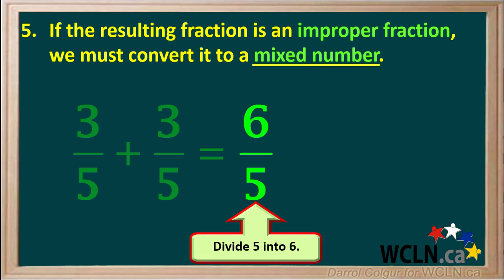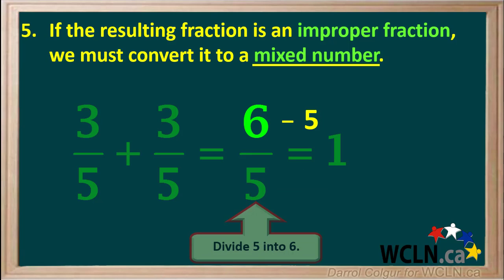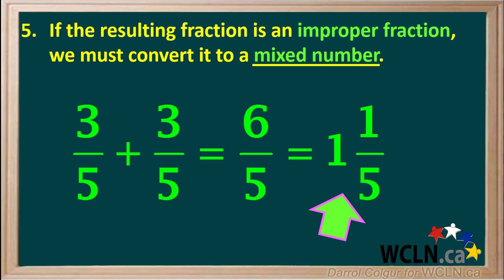We start by dividing 5 into 6. 5 goes into 6 one time, so we write the whole number 1. To find the remainder, we go 5 times 1 equals 5. Then we subtract the 5 from the numerator 6 to get the numerator of our remainder, which is 1. The denominator of our remainder is the same as the denominator of the improper fraction, which is 5. So our final answer to the sum of 3 fifths plus 3 fifths is 1 and 1 fifth.